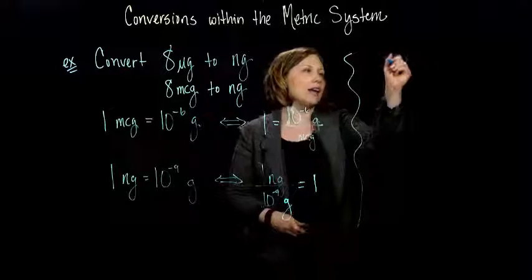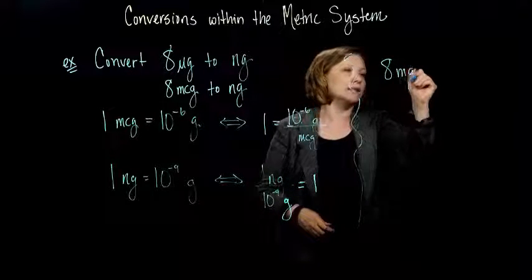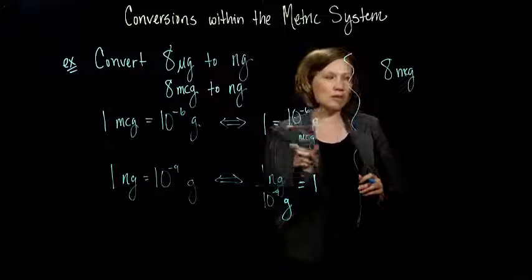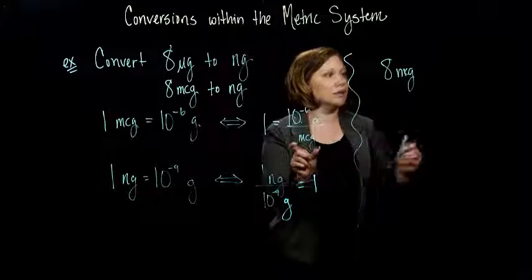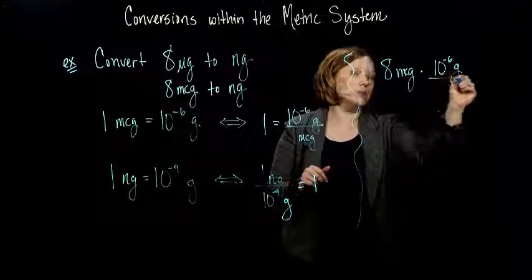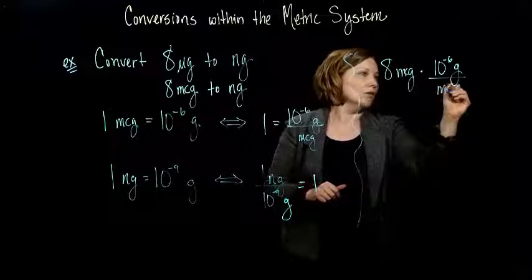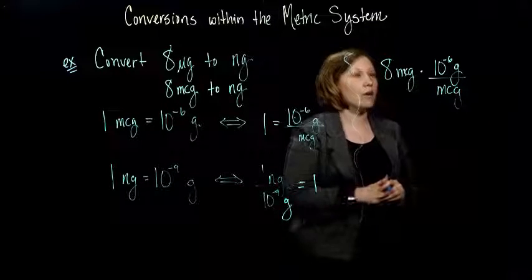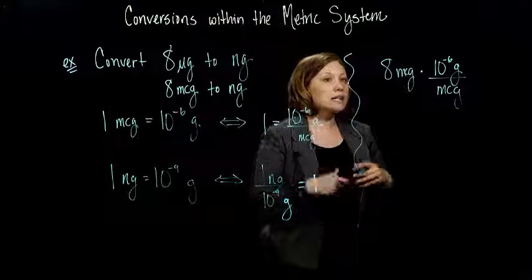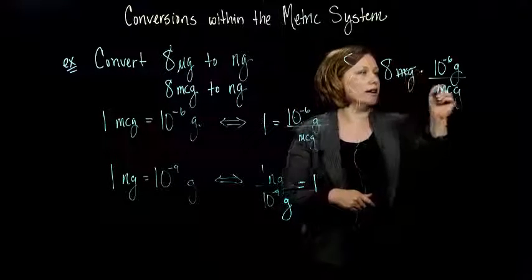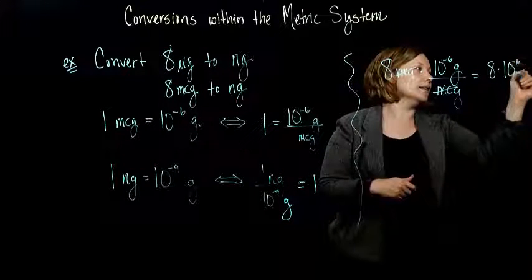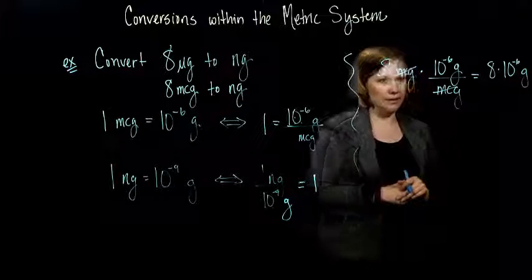If I have 8 micrograms and I'm trying to get to nanograms, and I can multiply by either one of these. If I multiply by 10 to the minus 6 grams over 1 microgram, what's going to happen to my microgram? It's going to cancel out. So I can cancel this out. And look what I have. I have 8 times 10 to the minus 6 grams.